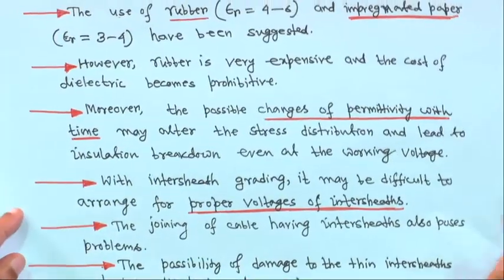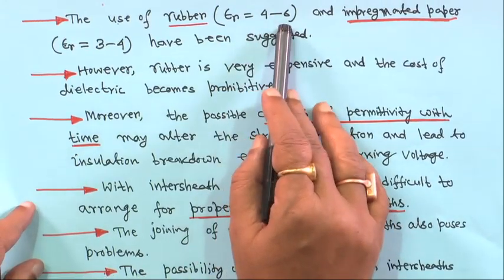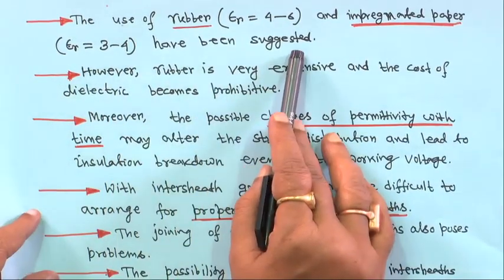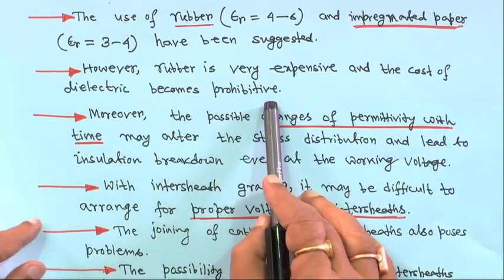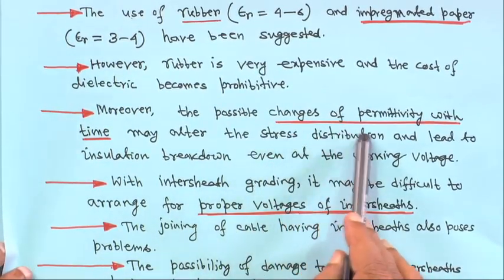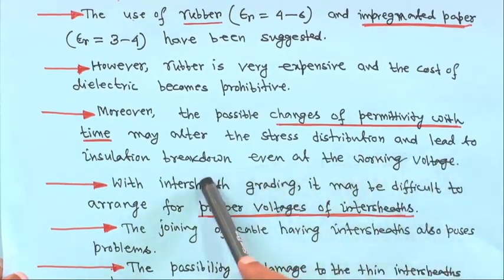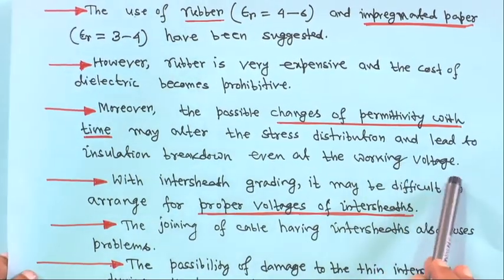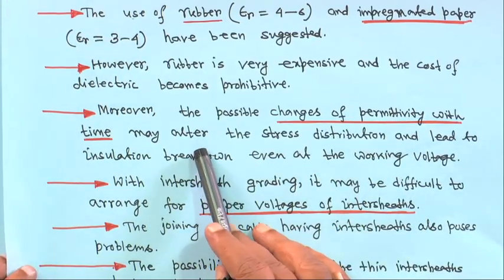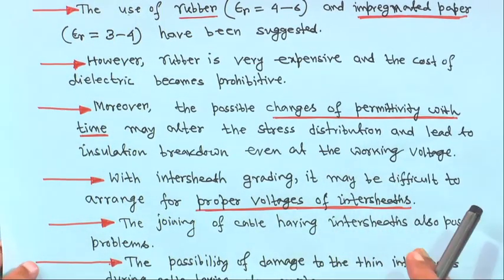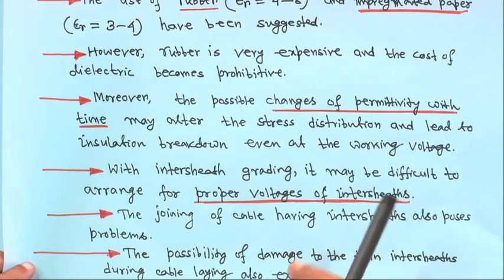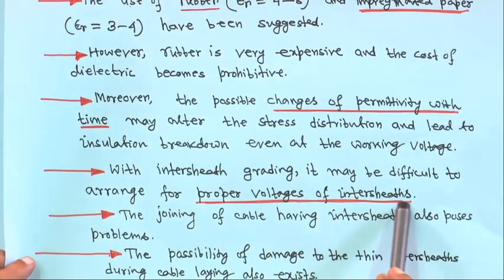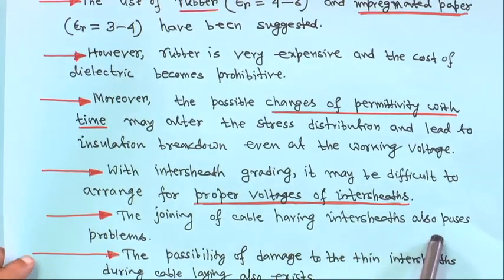Moreover, possible changes in permittivity with time may alter the stress distribution and lead to insulation breakdown even at the working voltage. With intercept grading, it may be difficult to arrange the proper voltage on the inter-sheets since they must be connected to transformer winding tappings, which is a very difficult task.